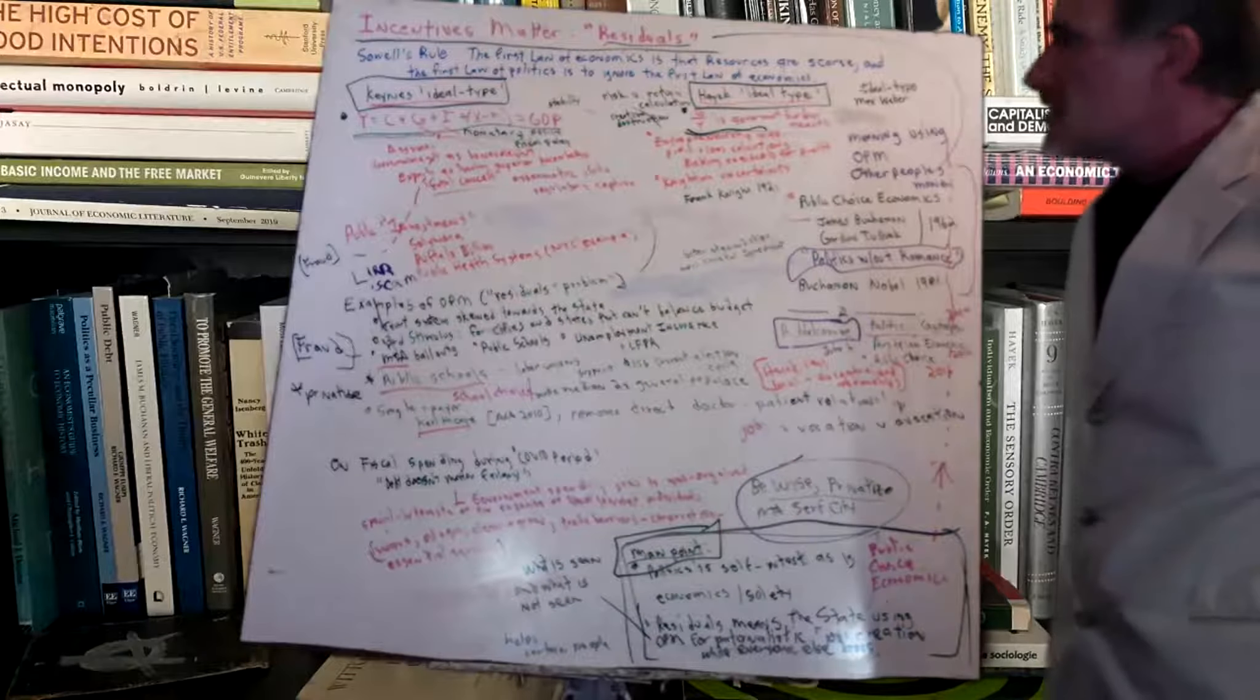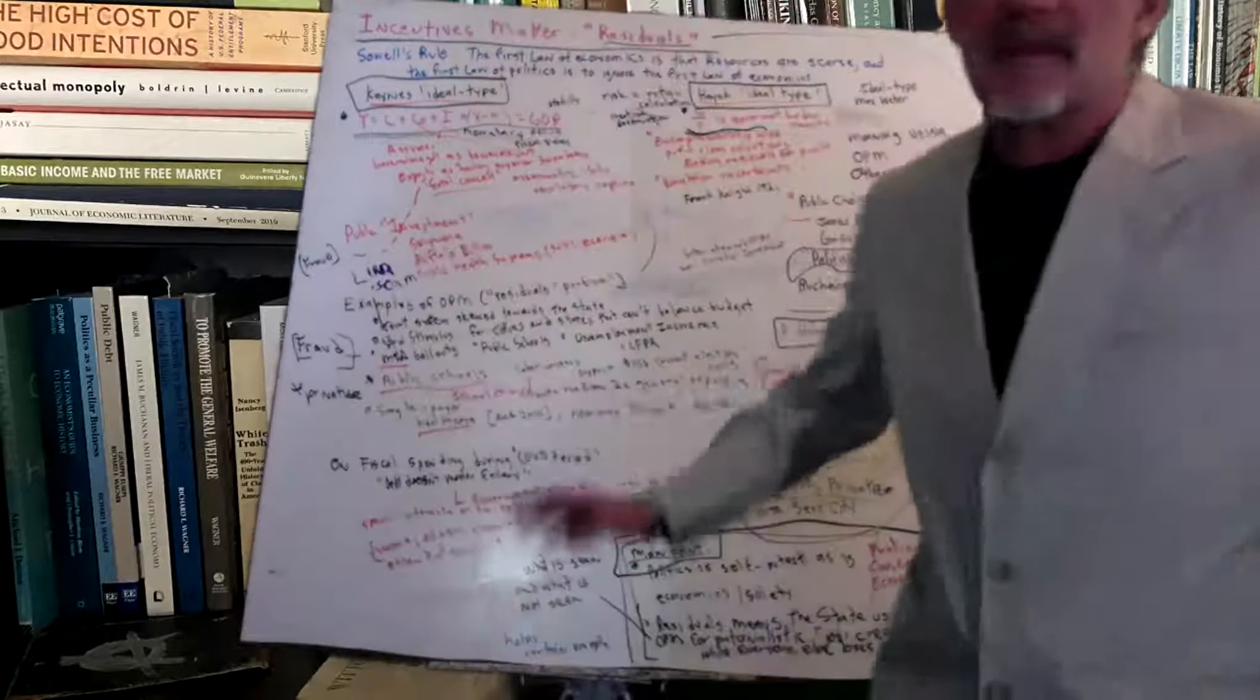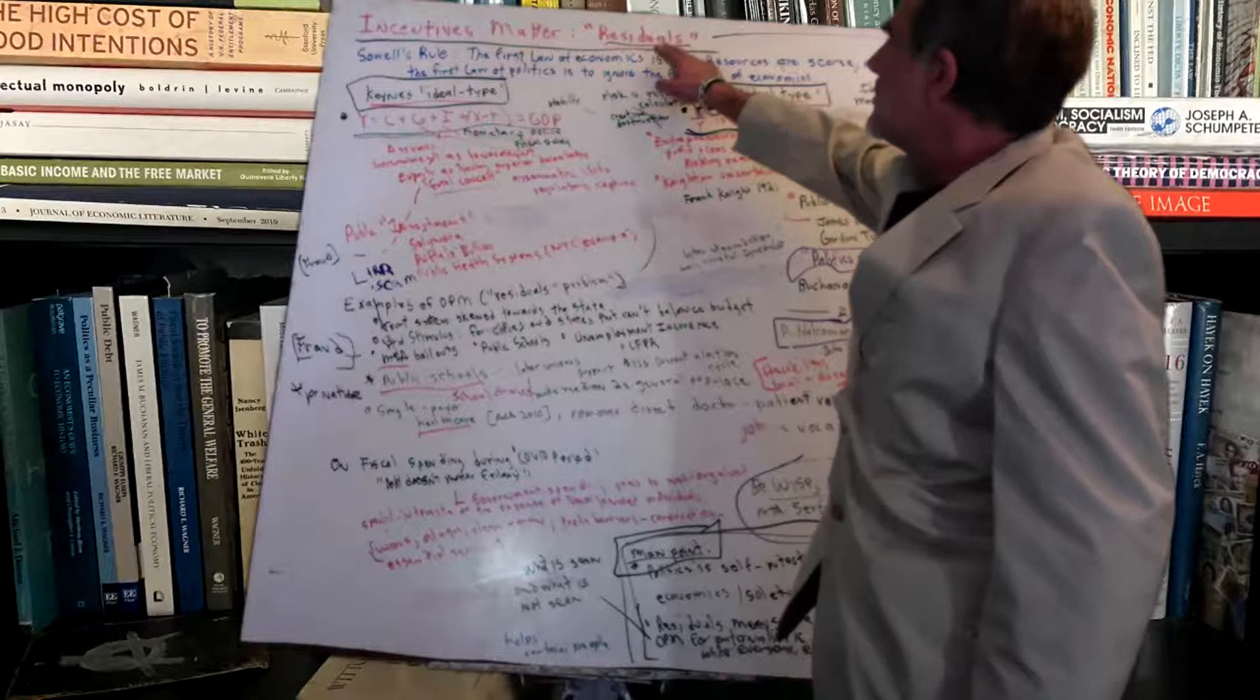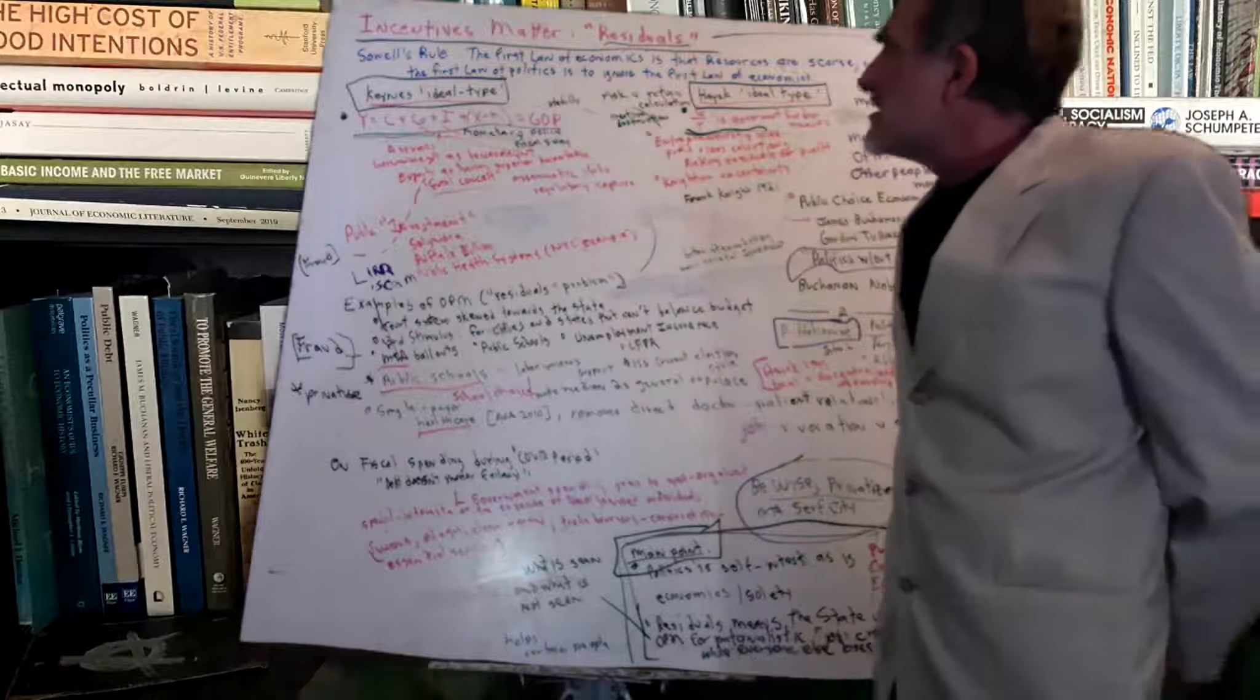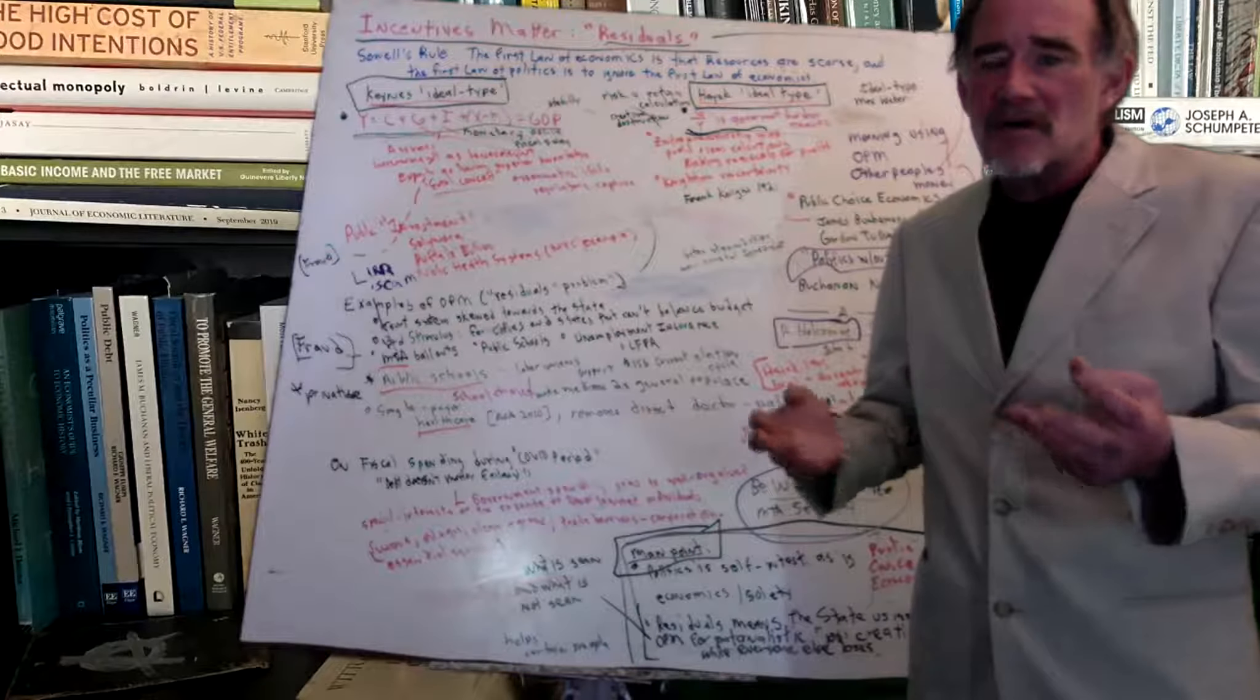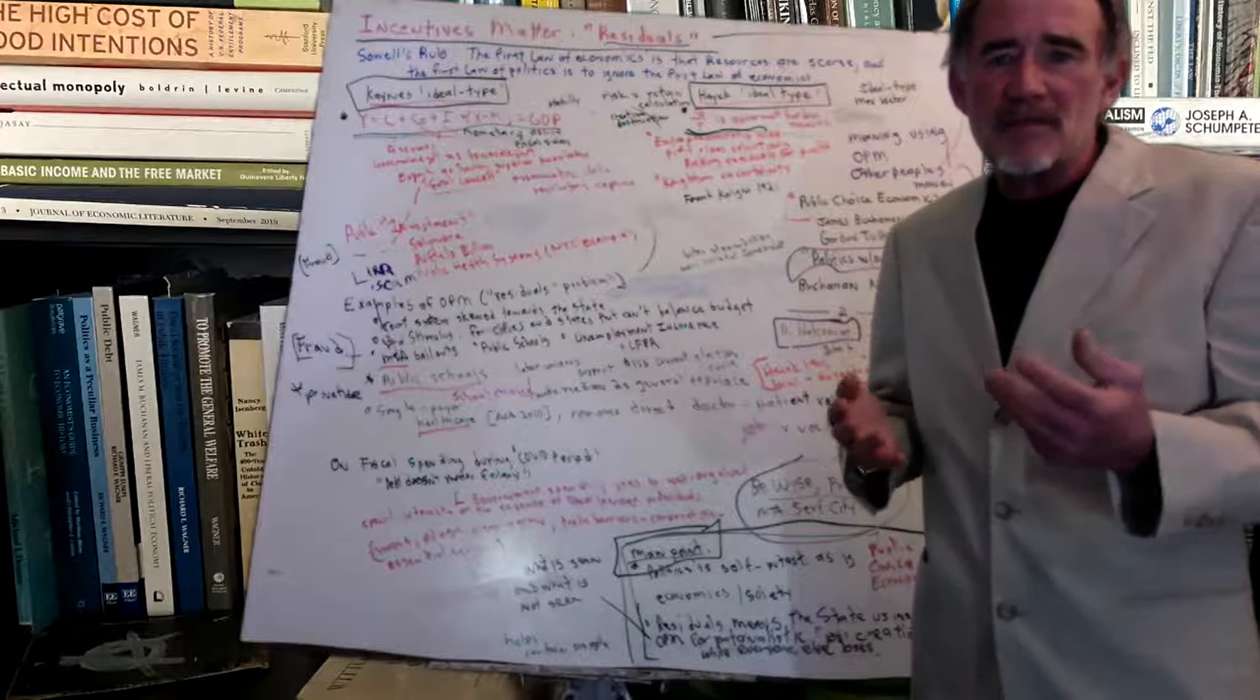In this teaching module, looking at category incentives matter residuals. Again, there's two types of ways human interaction occur through voluntary exchange or through the state's coercion, monopoly on coercion.